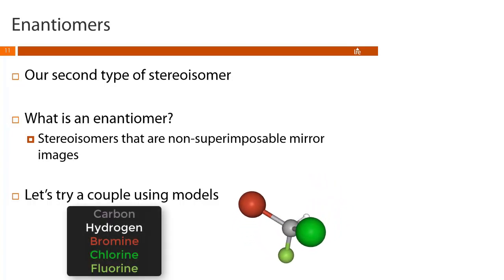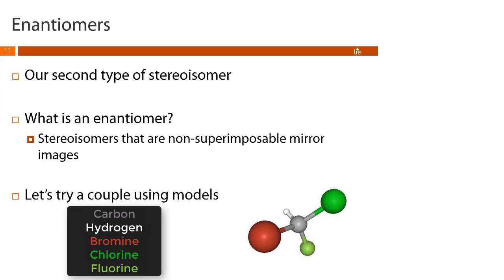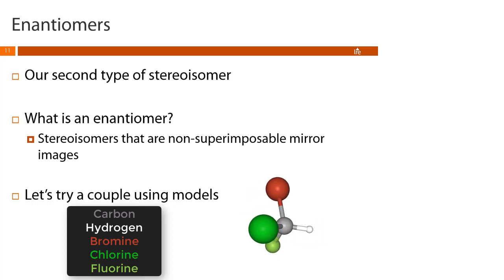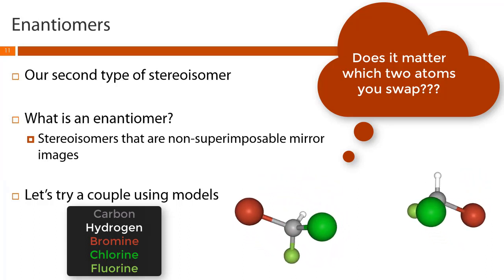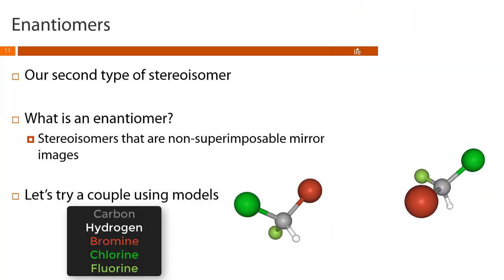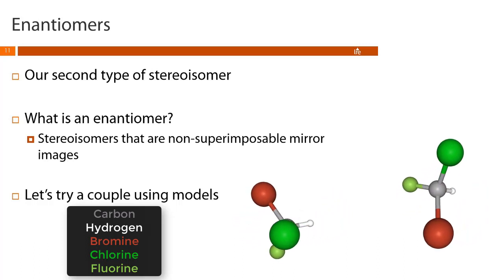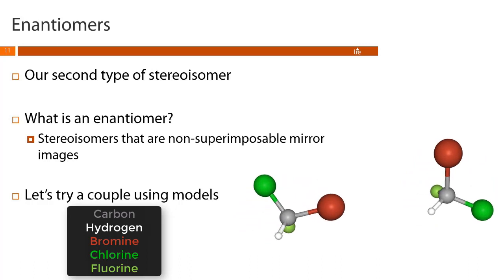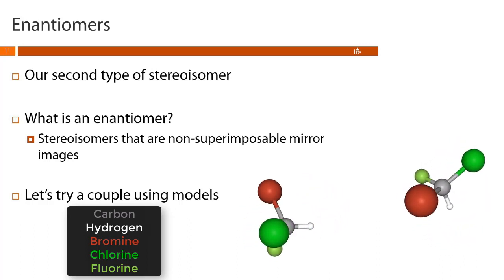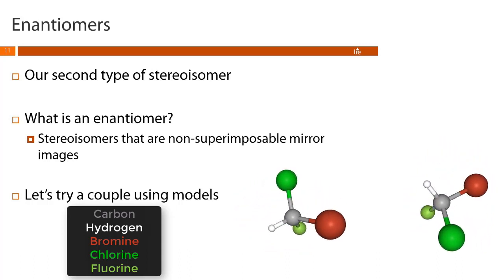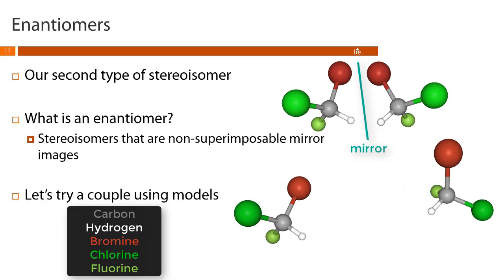Now remove any two atoms and swap their places — I'm going to swap my hydrogen and my bromine. What you've created is a pair of enantiomers: same molecular formula, same atomic connections, but different 3D shape, and they can only be interchanged by breaking bonds. There's no way to make them look identical without breaking bonds, so they're not superimposable — but you can line them up so one appears to be the reflection of the other.